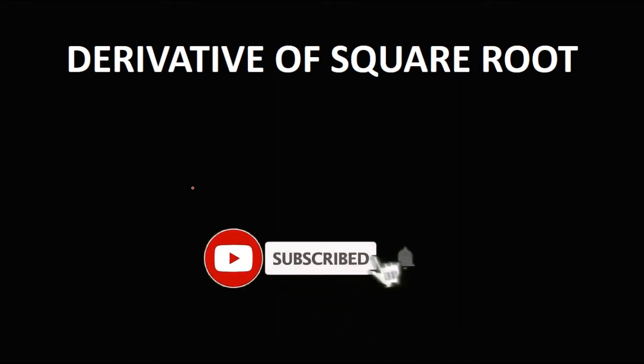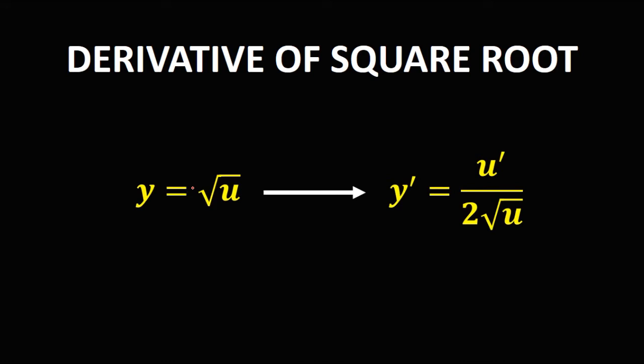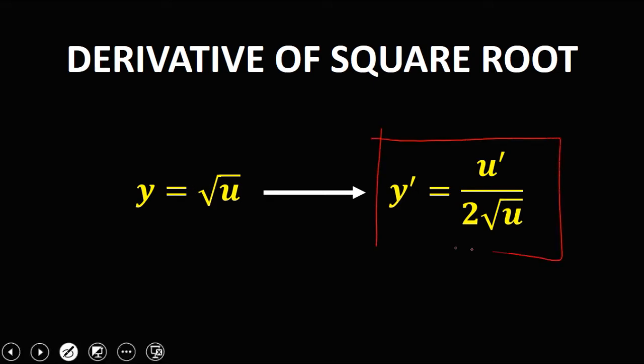So let's have this topic: finding the derivative of a square root. We have y equals square root of u, so to get the derivative, that's y prime equals u prime over 2 times the square root of u. So this is how to get the derivative of a square root.